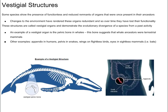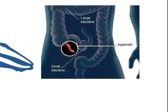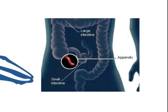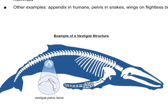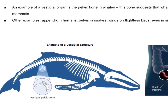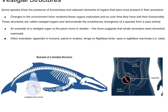Lastly, some species show parts or organs that have very little or no functionality that were once present in their ancestors. We all know about our appendix in humans, which has no known value. This is an example of a vestigial structure. There are other examples as well, like the pelvic bone in whales and snakes, and wings on flightless birds like chickens. These all demonstrate that there was evolutionary divergence of a species from a past activity.